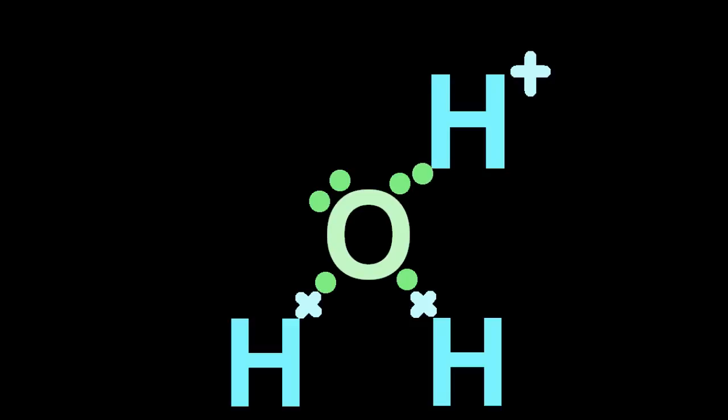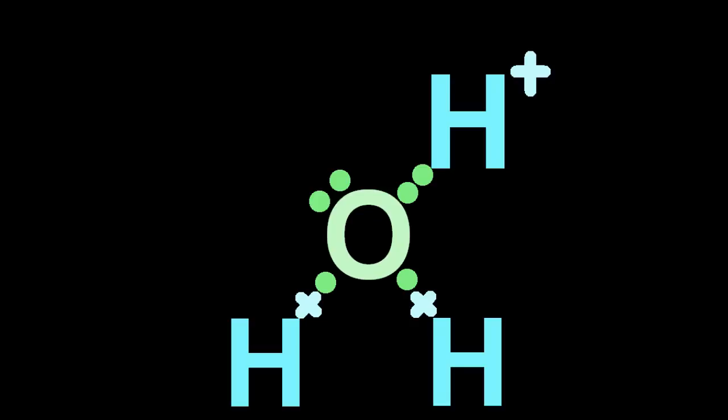So a dative covalent bond is where both electrons in the bond are from only one atom. So I've just made the hydronium ion, H3O+. So how would I draw this out?